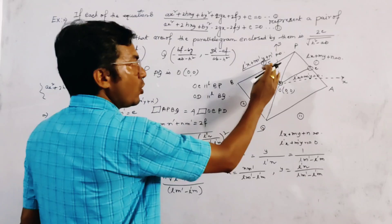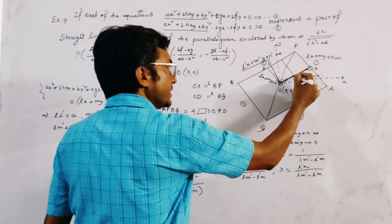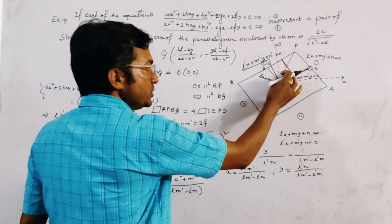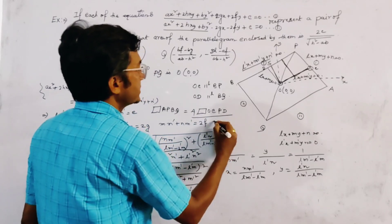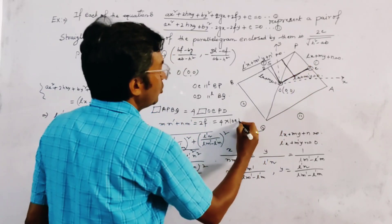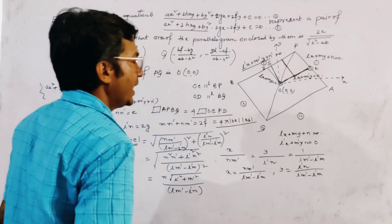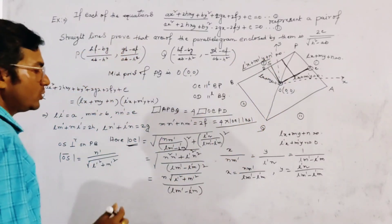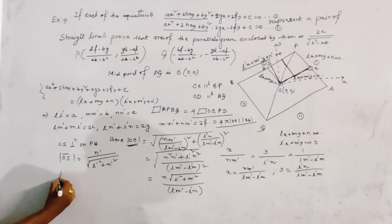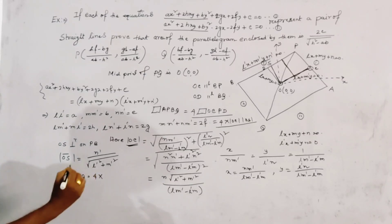The area of parallelogram OCPD equals |OC| × OS (base times perpendicular height between the parallel lines). The total area of parallelogram APBQ is 4 times this, giving: Area = 4 × |OC| × OS = 4 × [n√(l'² + m'²) / |lm' - l'm|] × [n' / √(l'² + m'²)].